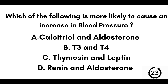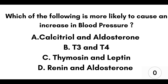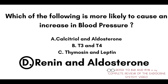Question number eighteen: which of the following is more likely to cause an increase in blood pressure? A) Calcitriol and aldosterone. B) T3 and T4. C) Thymocin and leptin. Or D) Renin and aldosterone. Our answer here is D, renin and aldosterone.